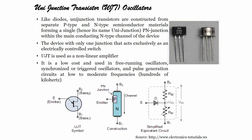Let us see how exactly UJT will work as an oscillator. To understand that we can see that like diodes, unijunction transistors are constructed from separate p-type and n-type semiconductor materials, forming a single p-n junction within the main conducting n-channel of the device.